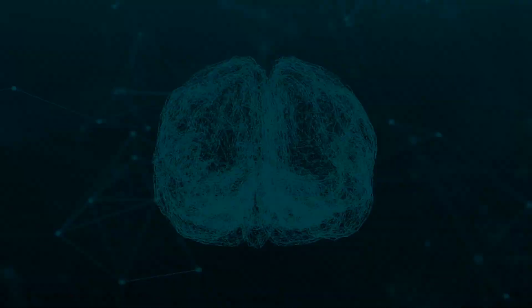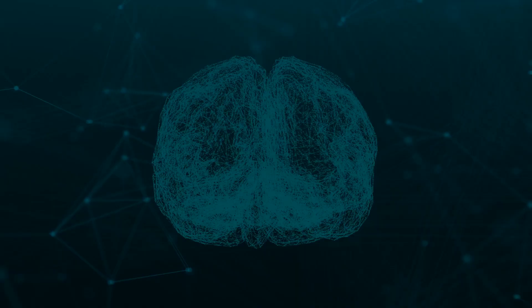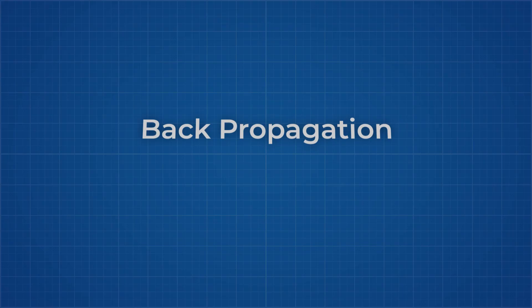For a neural network to learn, there has to be an element of feedback involved. This is done through a process called back propagation.